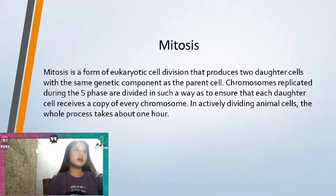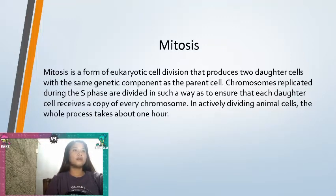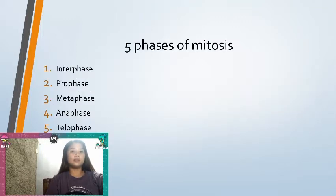Chromosomes replicated during the S-phase are divided in such a way as to ensure that each daughter cell receives a copy of every chromosome. In actively dividing animal cells, the whole process takes about one hour.